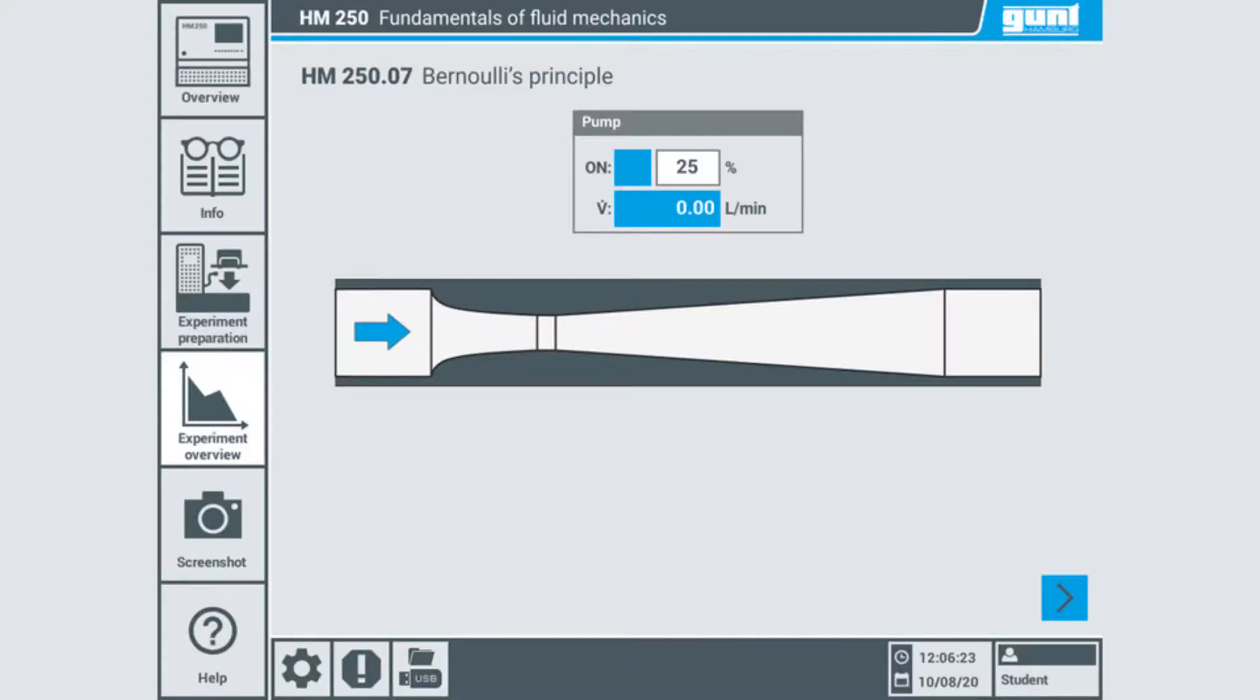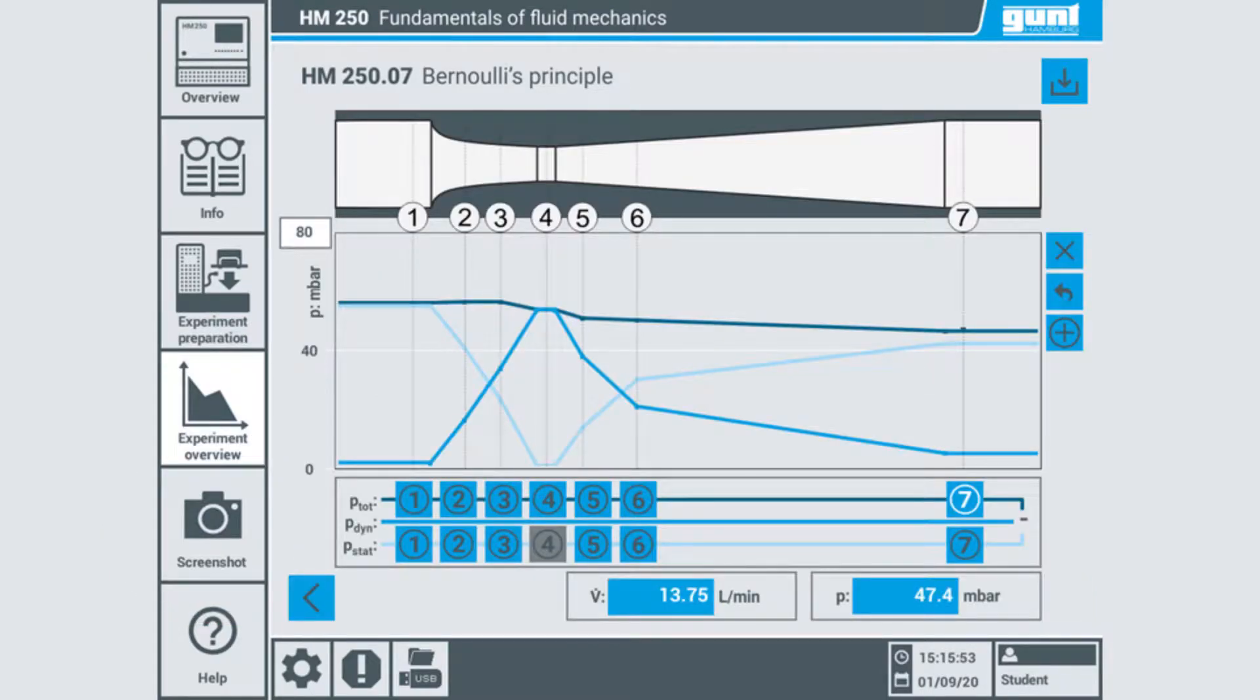Then we repeat this for all other locations along the Venturi nozzle. As with all experiments in our Gunt Fluidline series, you can take screenshots at any time using the screenshot button here.